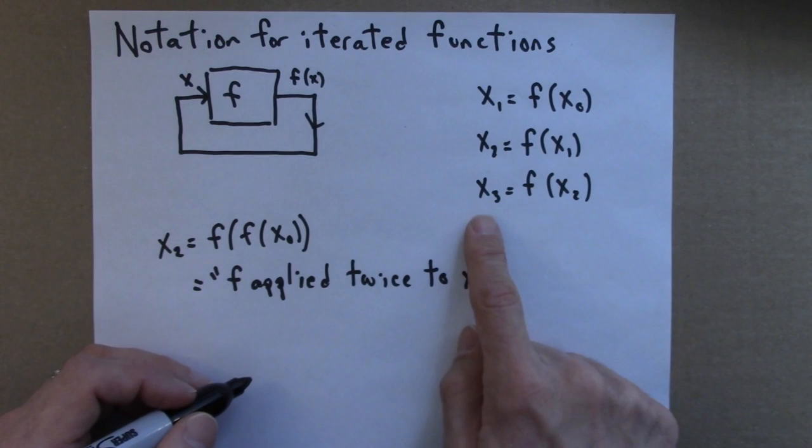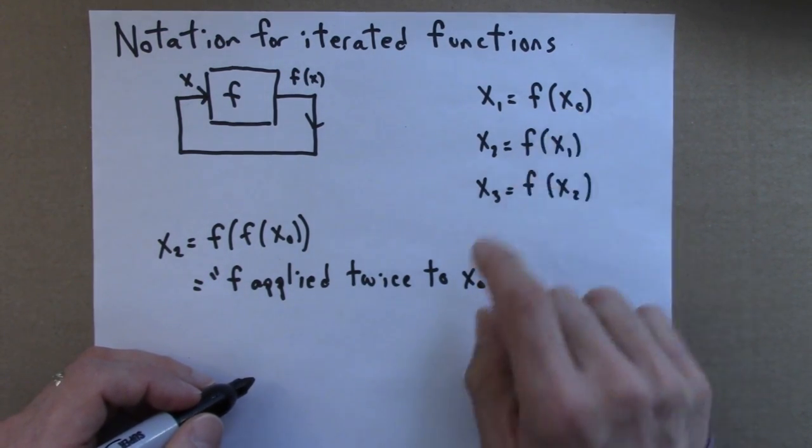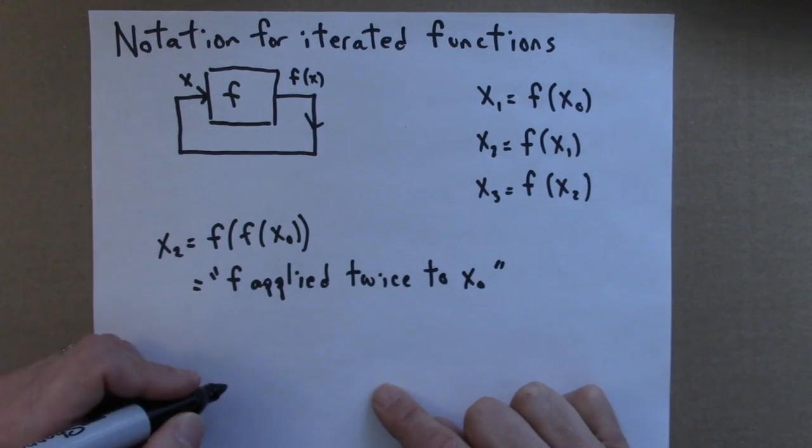Similarly, x3, the third iterate, I obtain by starting with the seed and applying f to it three times. I can write that as follows.